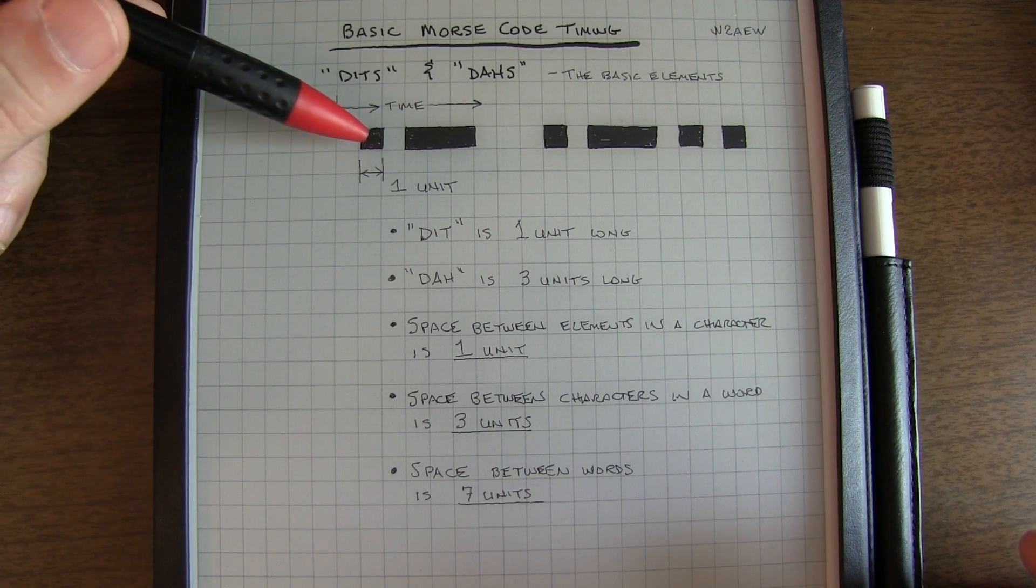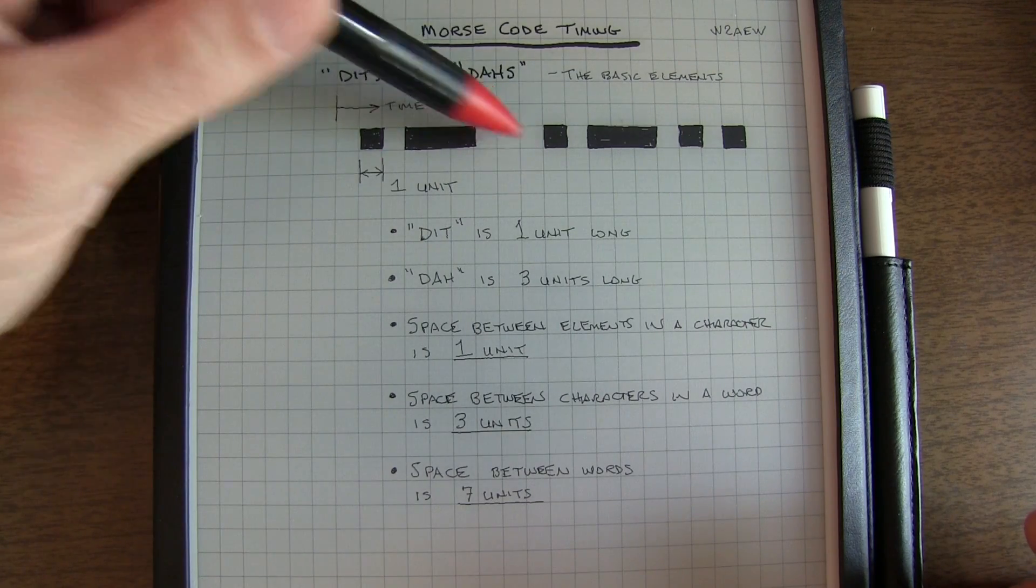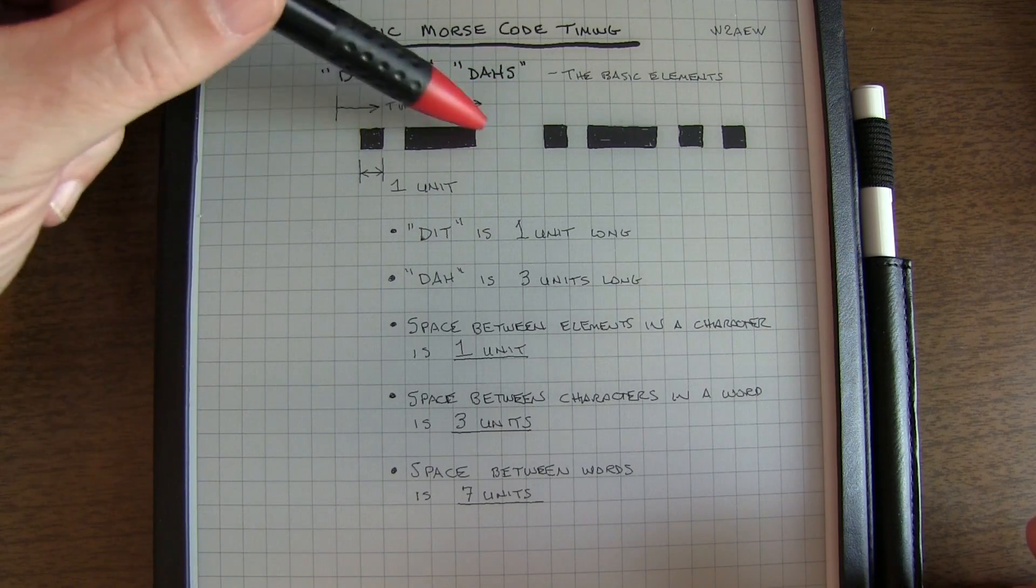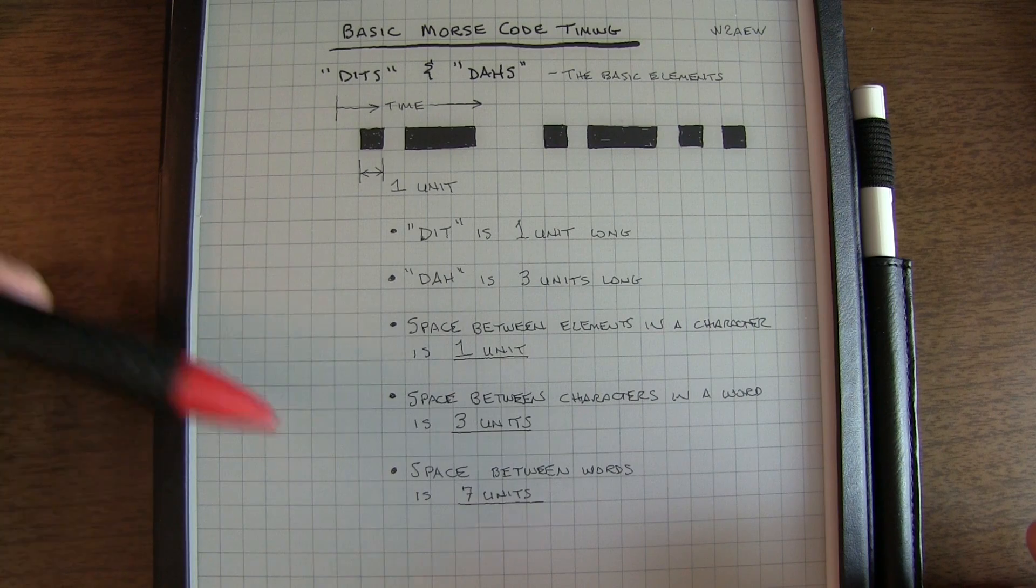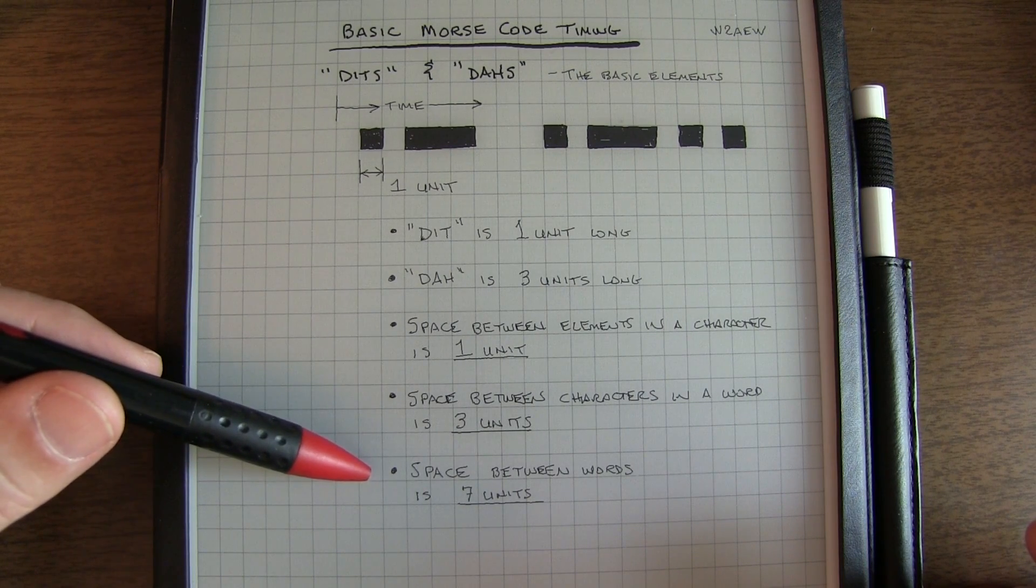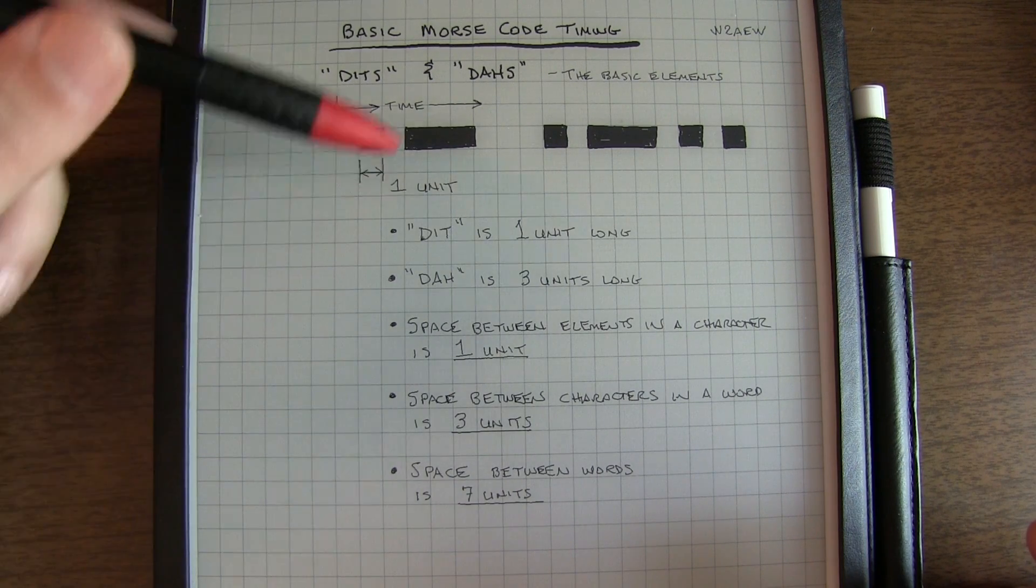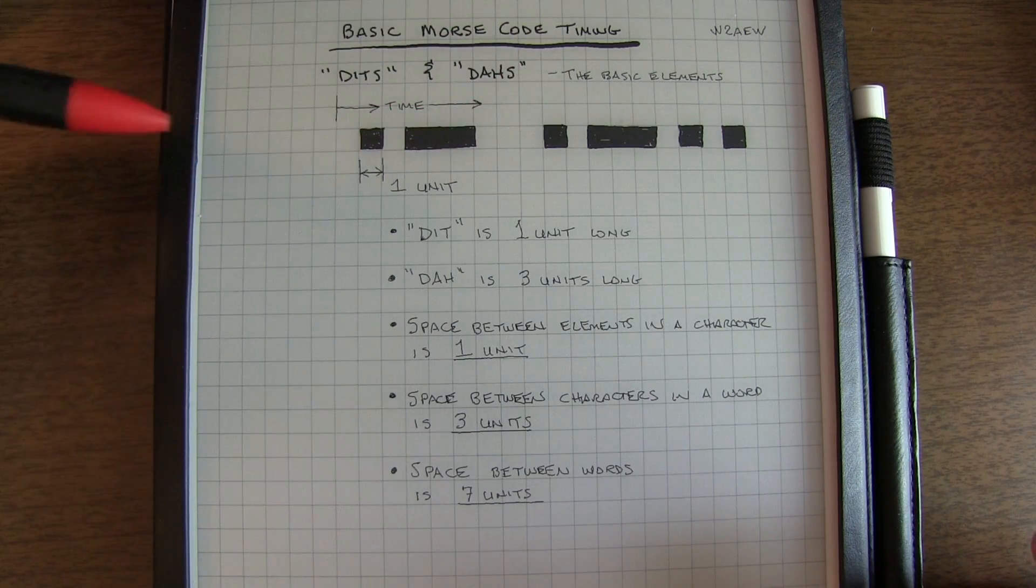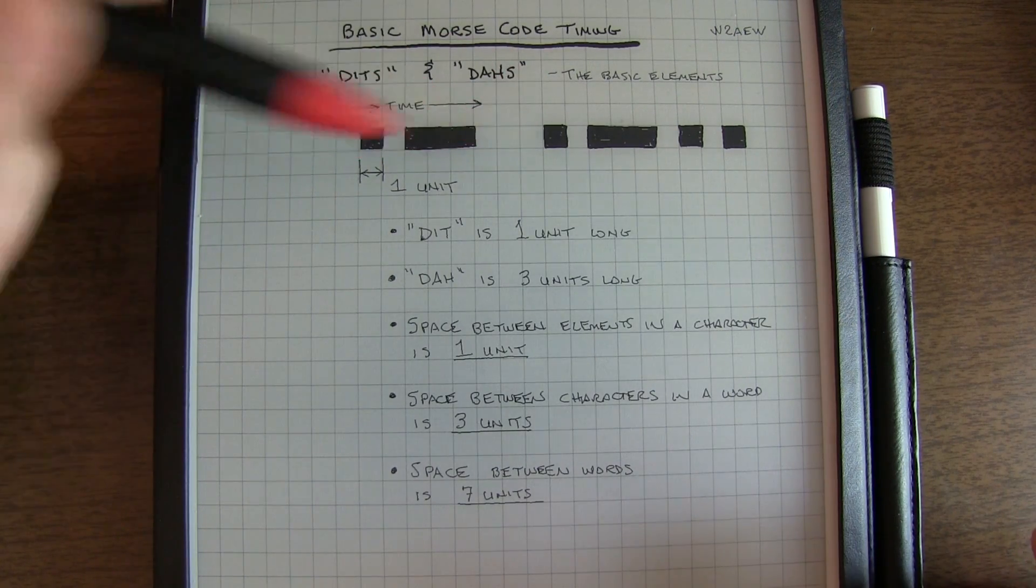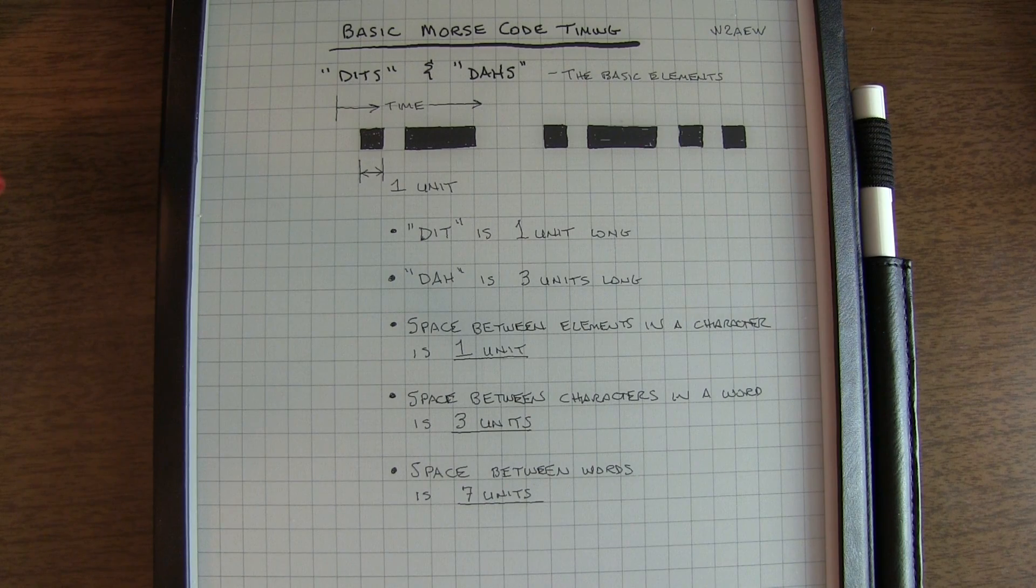In this case, we have an A and an L. The space between the A and the L is equal to the duration of a dah. And then finally, the space between words is seven units. So basically seven of these dit spaces, or dit durations, is the duration of the space between words.